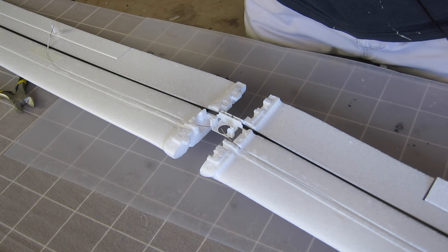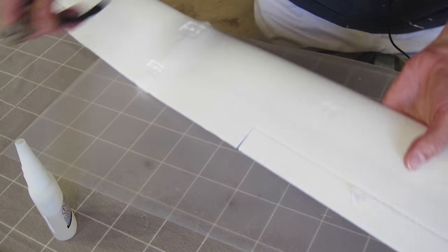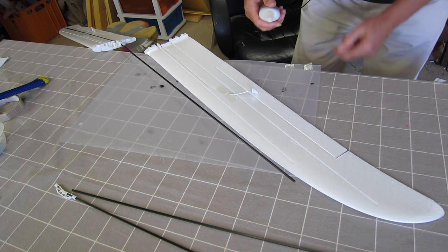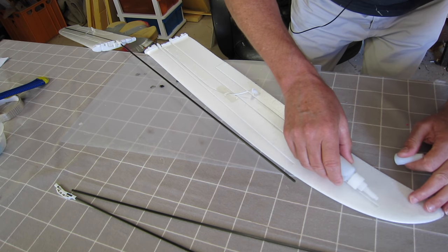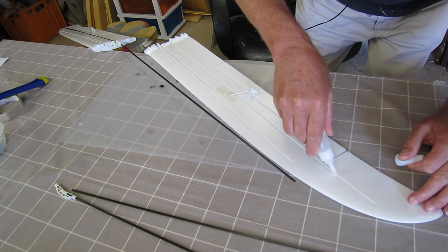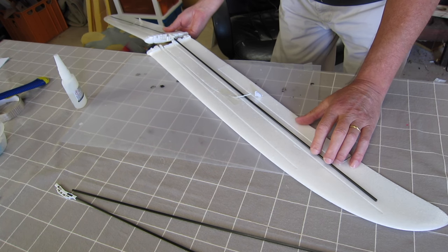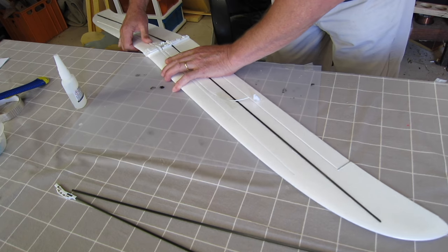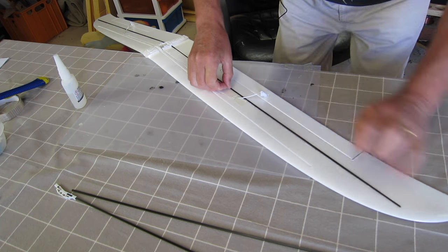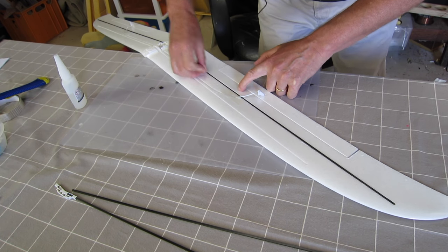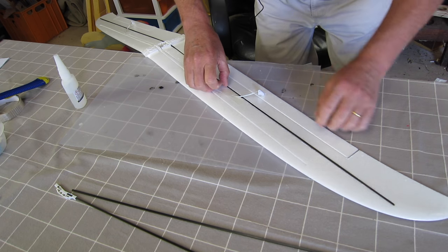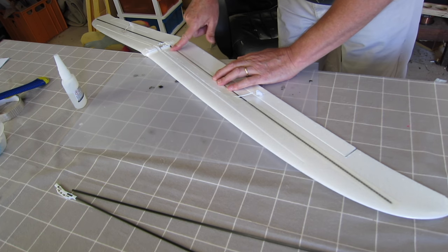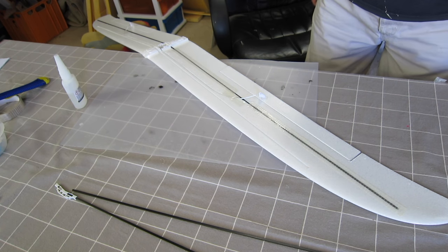So now it's time to glue the spars in, and something I need to do first is actually get rid of this. I've got some tape ready here to tape it down once it's in. Dribble some CA in, make sure we can get all the way in. Push it down, all the way, very good. That went well.